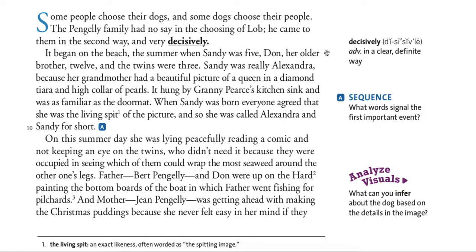It began on a beach the summer when Sandy was five. Don, her older brother, was 12, and the twins were three. Sandy was really Alexandra because her grandmother had a beautiful picture of a queen in a diamond tiara and a high collar of pearls. It hung by Granny Pierce's kitchen sink and was as familiar as the doormat. When Sandy was born, everyone agreed that she was the living spit of the picture, and so she was called Alexandra, and Sandy for short.